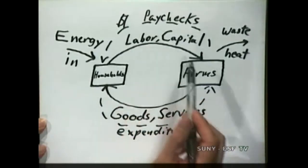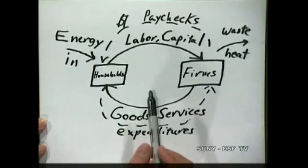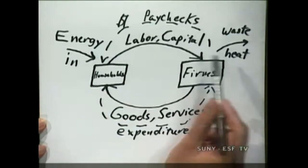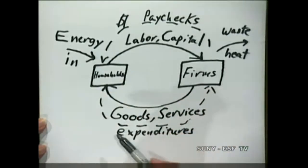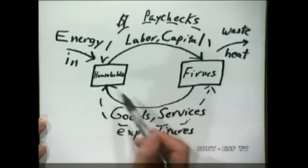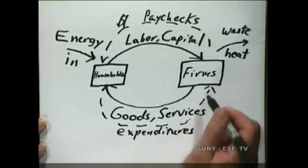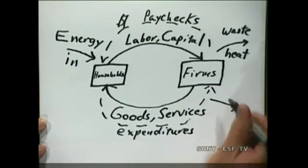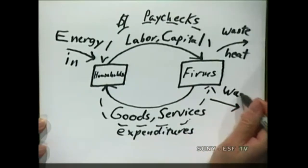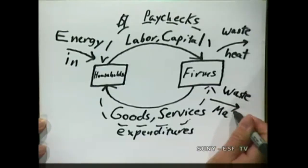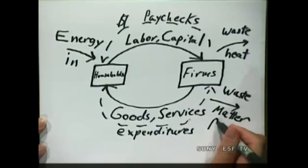Now, the economy is not just made out of energy — we also have materials. Energy can't be recycled, but materials can, though not all materials. So if all materials can't be recycled in this system, what do we have to account for? Waste material, or matter. And what do we often call this stuff? We call it pollution.